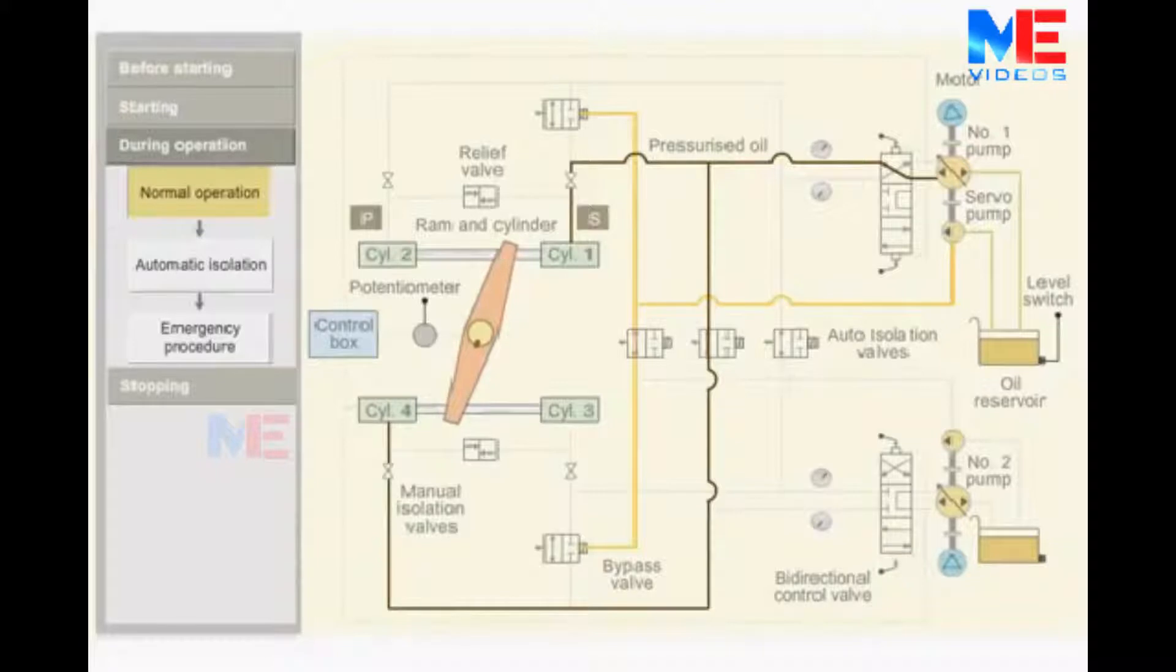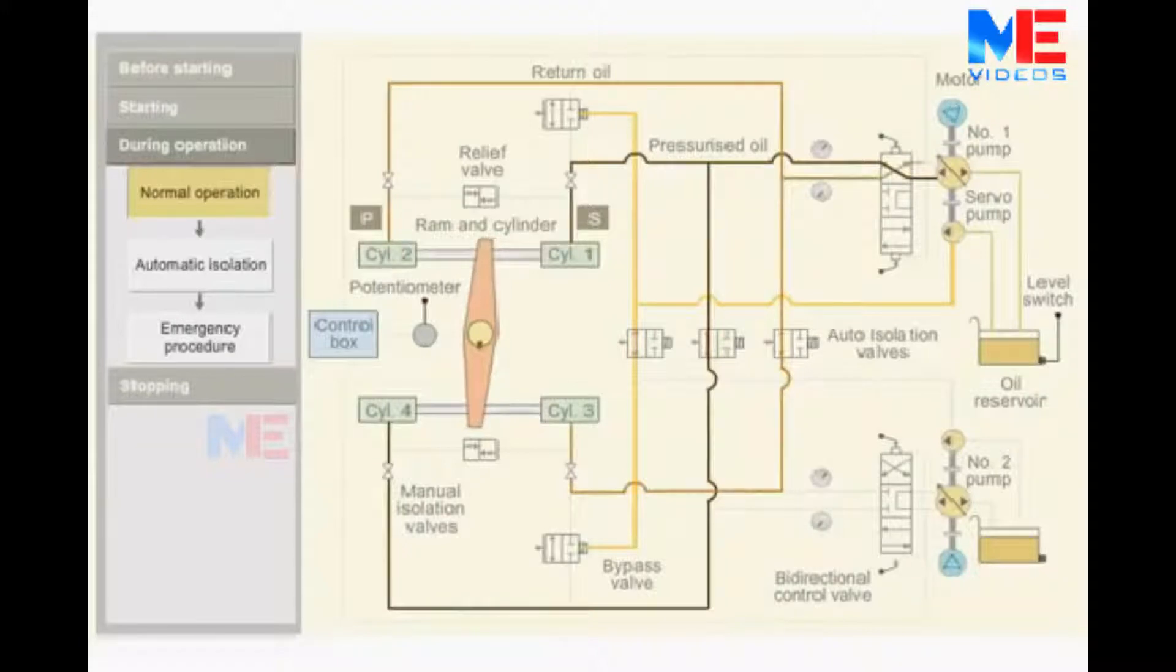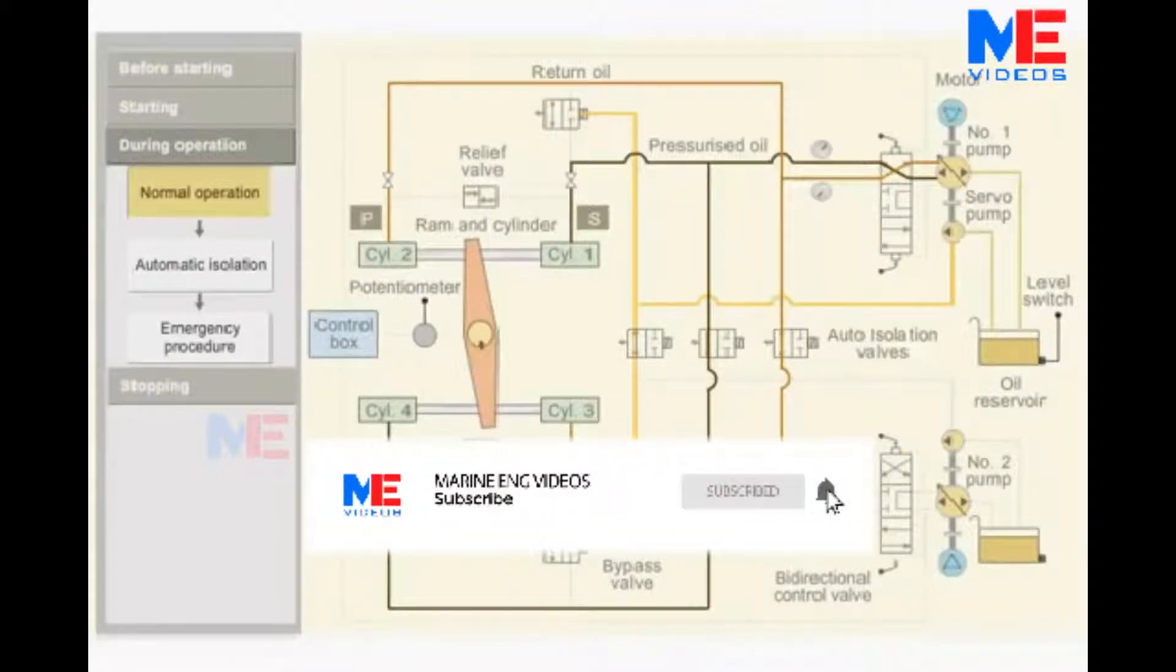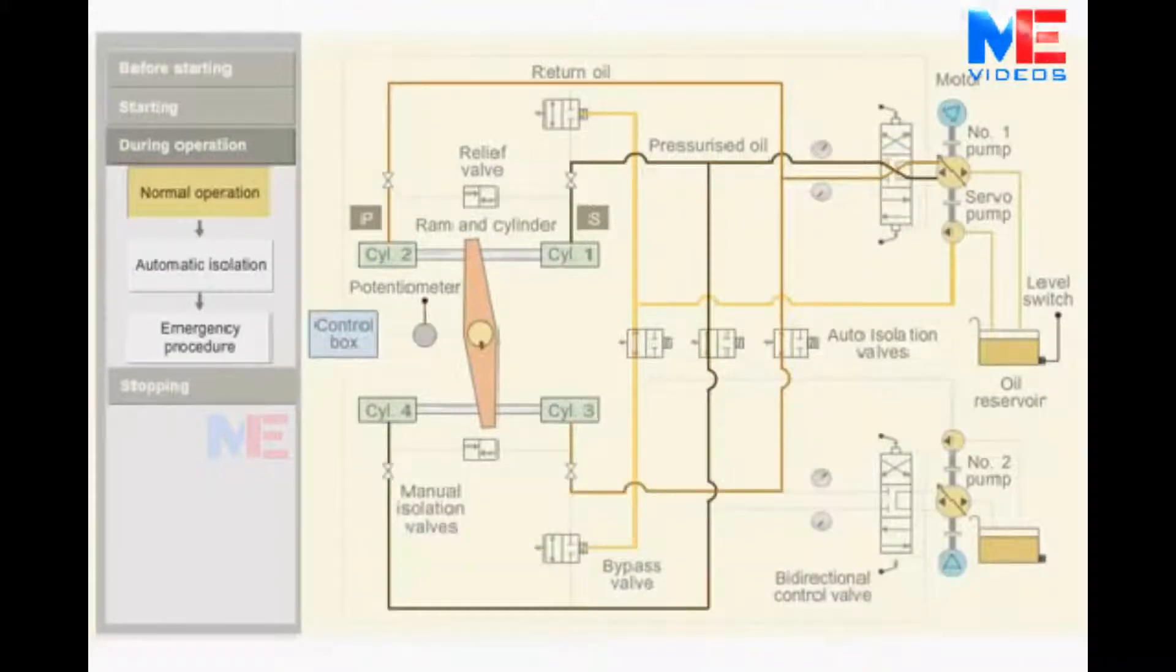The return oil from ram 3 and 2 flows back to the return side of the pump. When the rudder reaches the starboard position, the potentiometer sends a signal to the control box. The control box sends a signal to the bidirectional control valve. The valve is pushed back to its initial position. This blocks the oil flow and stops the movement of the ram.